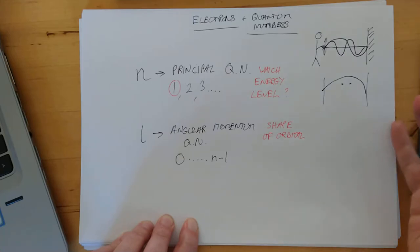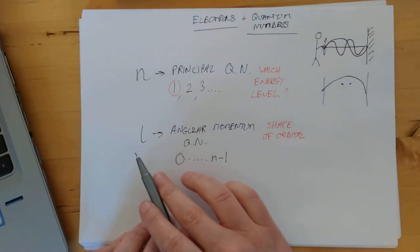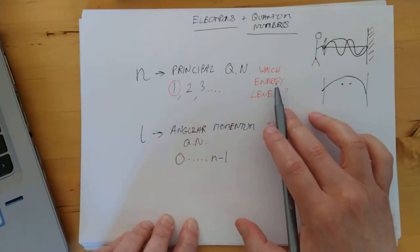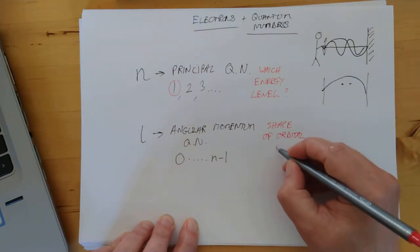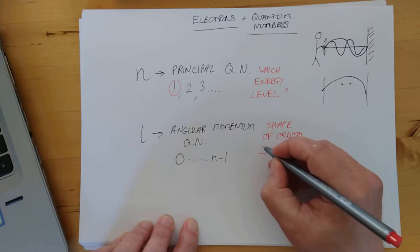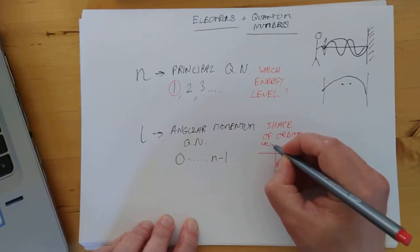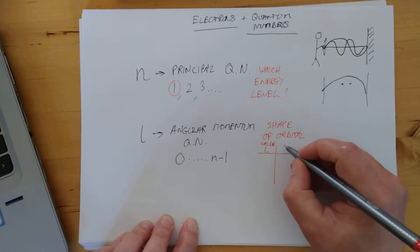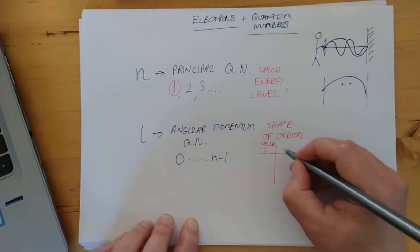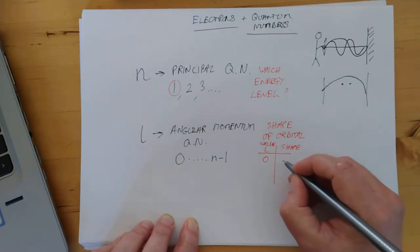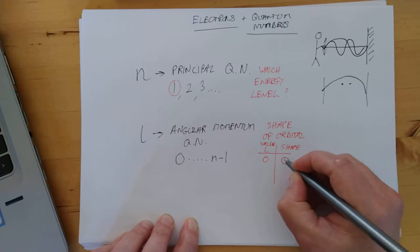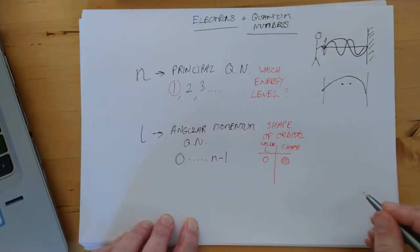The value of L tells you the shape of the orbital. Remember, the orbital was the piece of space that you find this particular electron in. What are the values of L? The values of L are from 0 up to whatever N value you've got, minus 1.